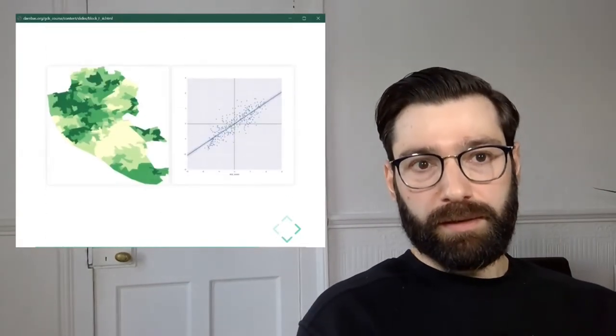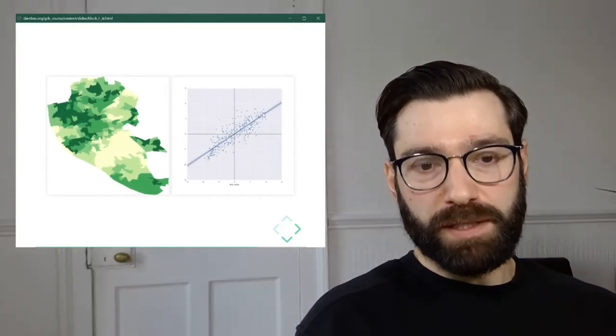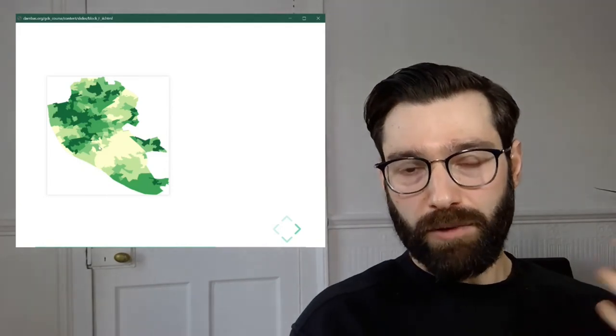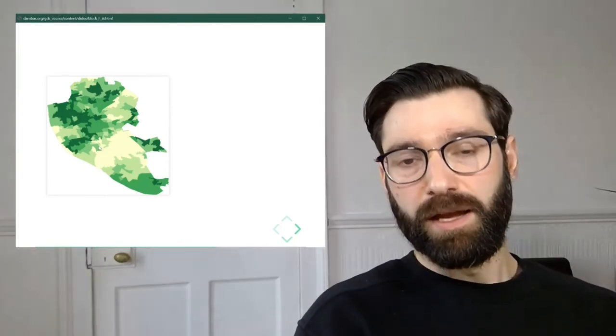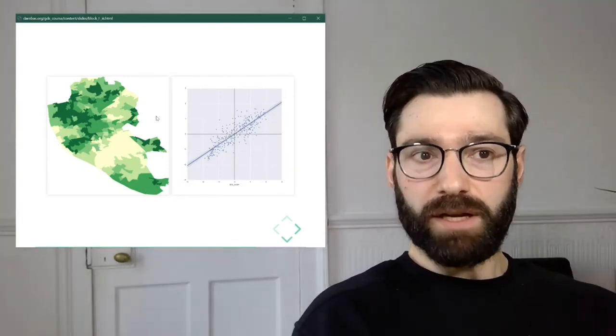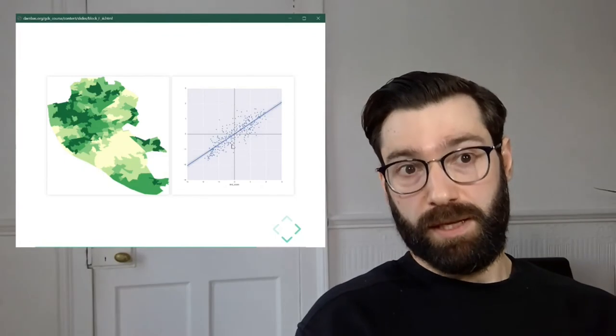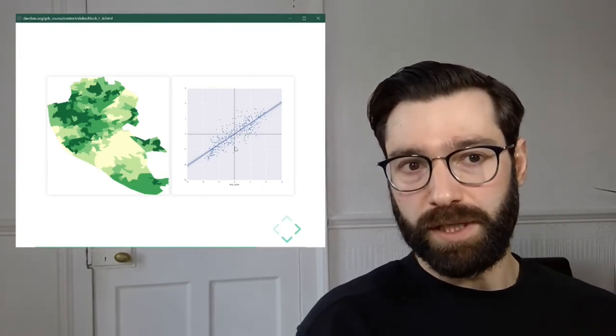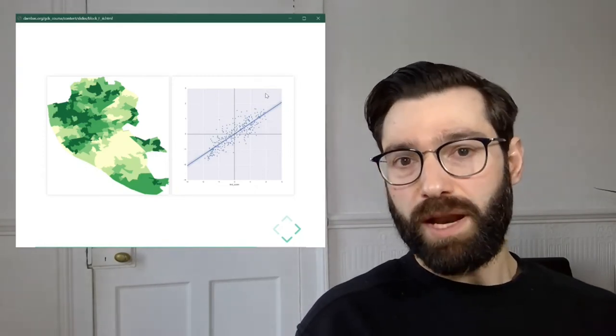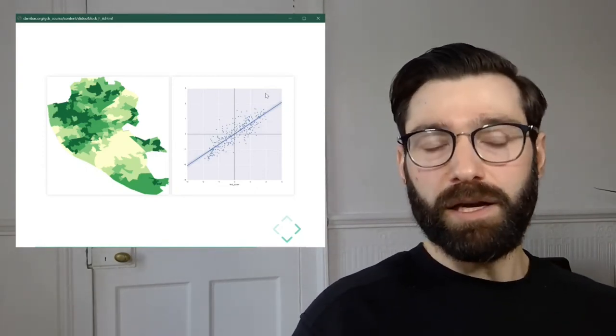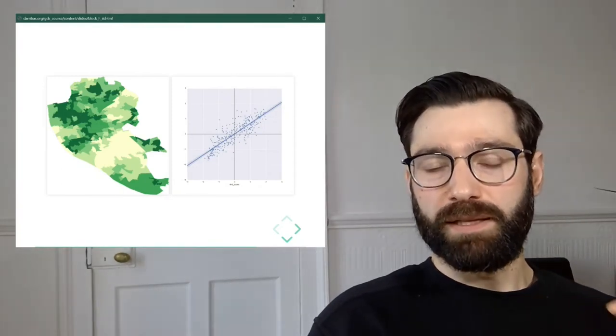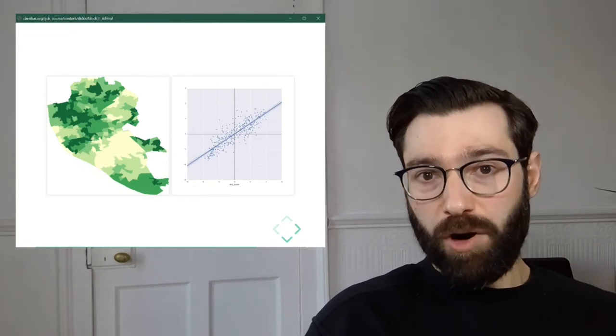Once we get a visual representation, remember, we start with a geographical pattern and we want to characterize it statistically. Our first step is Moran plot, which is a graphic device, a non-spatial device except that it has the spatial lag baked into it. Then the next step is trying to characterize this graphical device with a number.